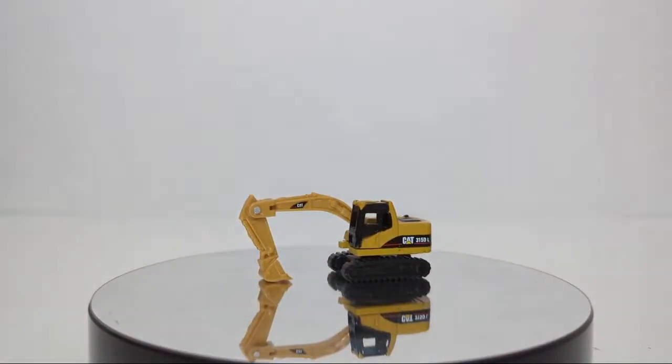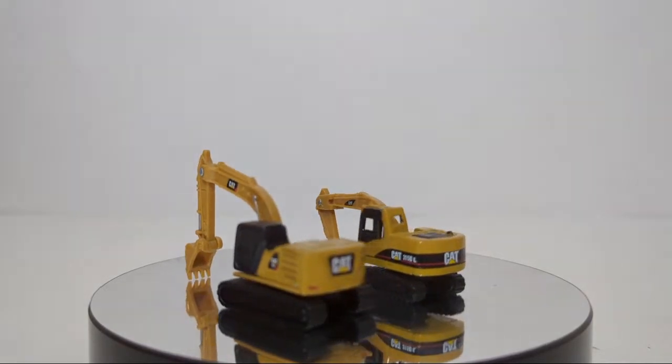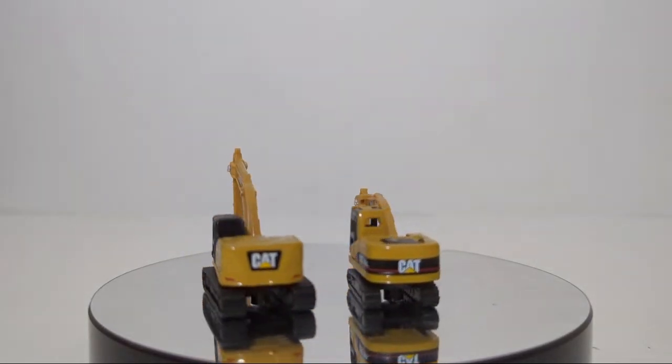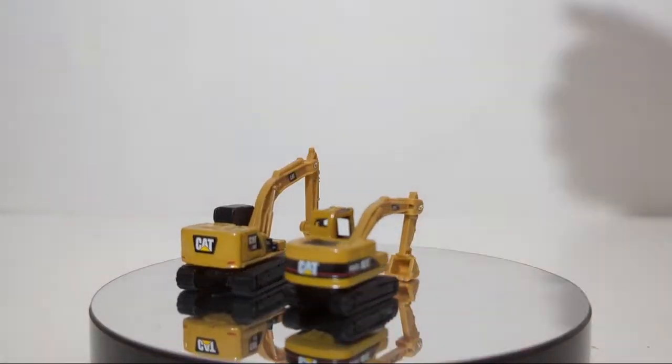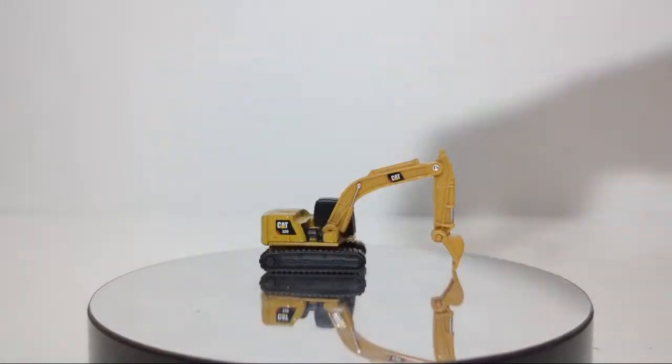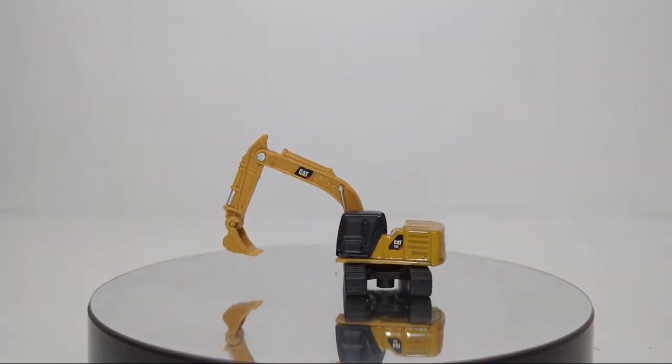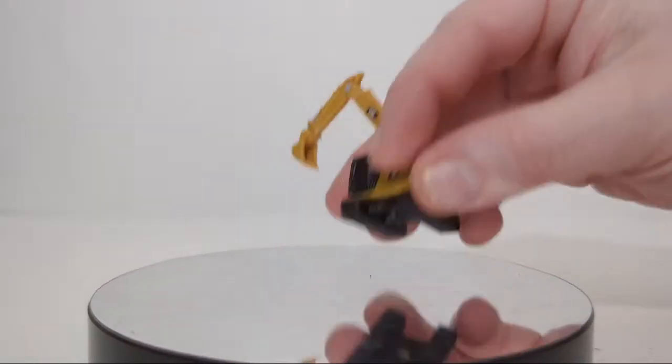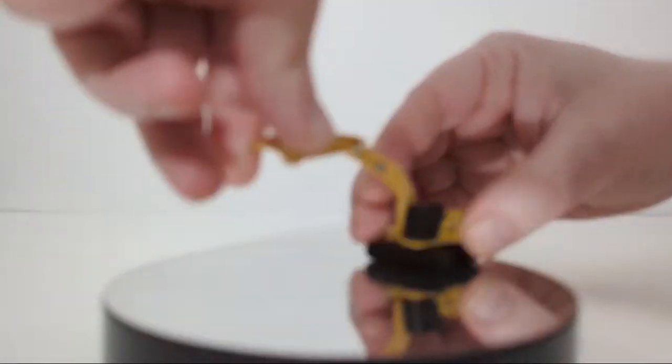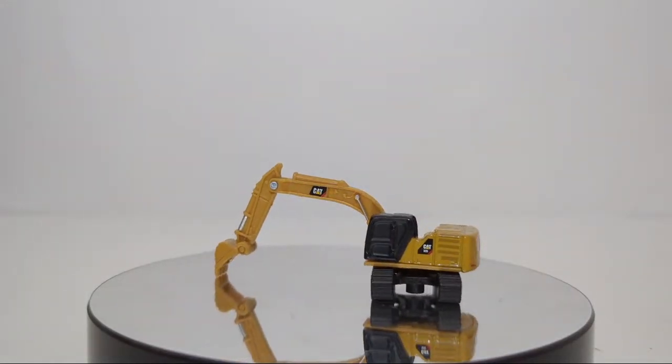Here is a Diecast Masters 315 excavator and a 320 next gen. The 320 is an awesome model. Both are 1:160 scale and scale out very well. If you're looking for an excavator in N-scale and don't want to pay an arm and a leg, I'd absolutely recommend one of these. The boom and stick has full functionality, bucket curls in. The only thing that doesn't work is the tracks because it's so small.